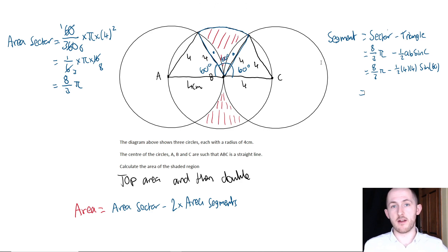Now it's time for the segment. The segment is just going to be the area of the sector, which we've already worked out is 8 pi over 3, and we need to minus the area of the triangle. What's the area of a regular triangle? It's going to be half a b sine c.